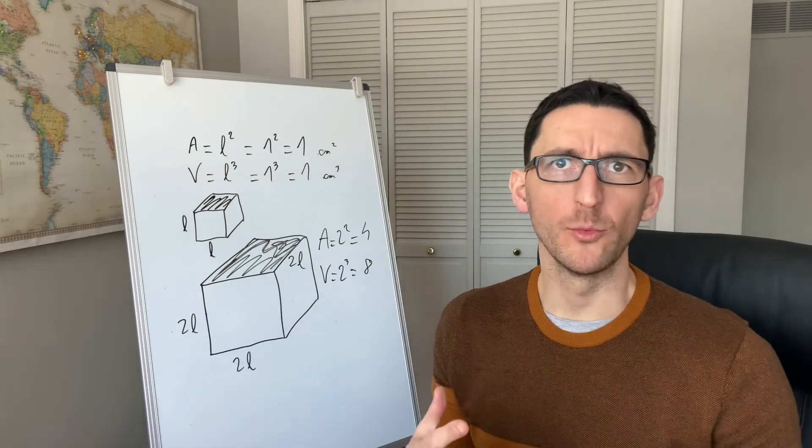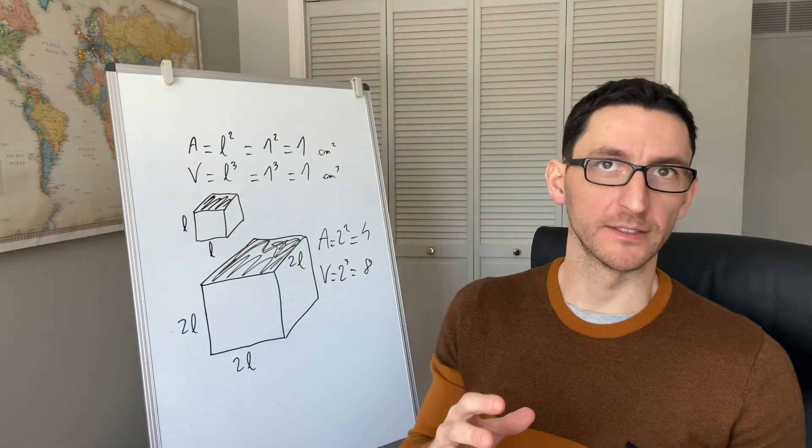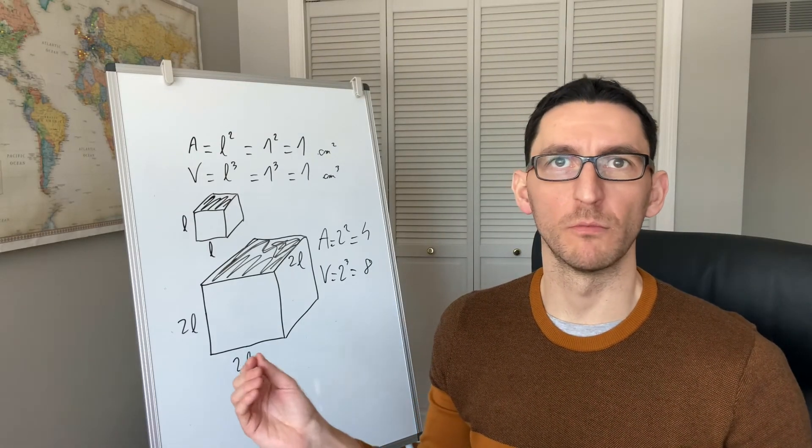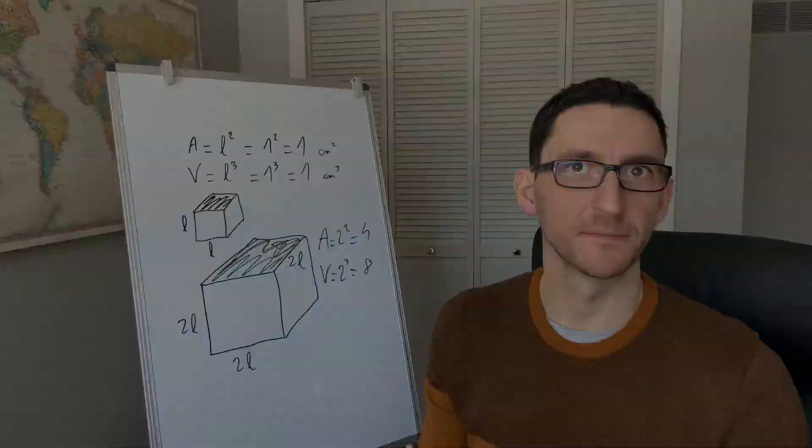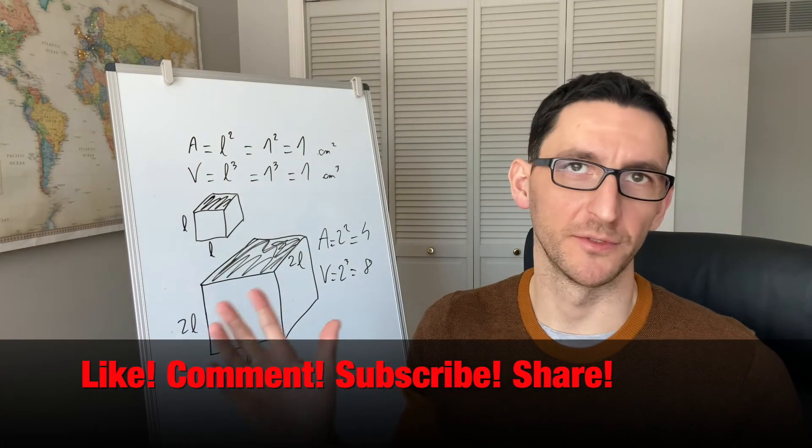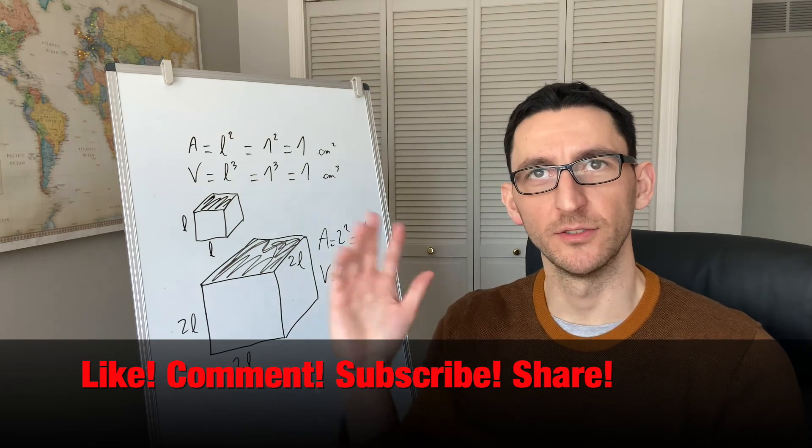There are definitely much more than the square cube law to explain why we don't see horses the size of elephants or ants the size of ducks. Let me know in the comments if you would like me to explore more one of those topics. If you enjoyed the video, you can hit the like button, subscribe and share the video. Thank you for watching. It was The French Scientist and I'll see you next time.